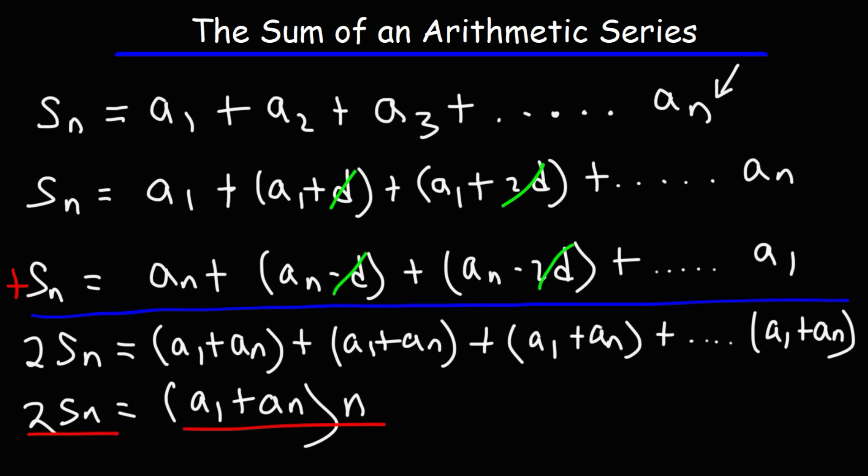Next we need to divide both sides by 2. And so that's how we can derive the formula for the sum of an arithmetic series. It's the first term plus the last term divided by 2 times n.